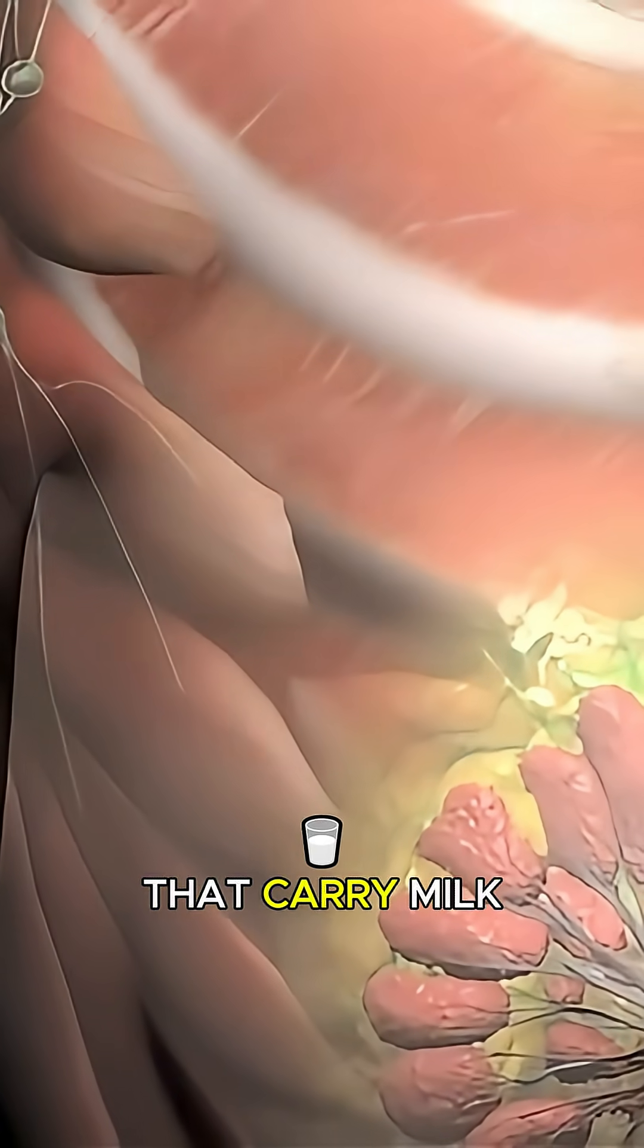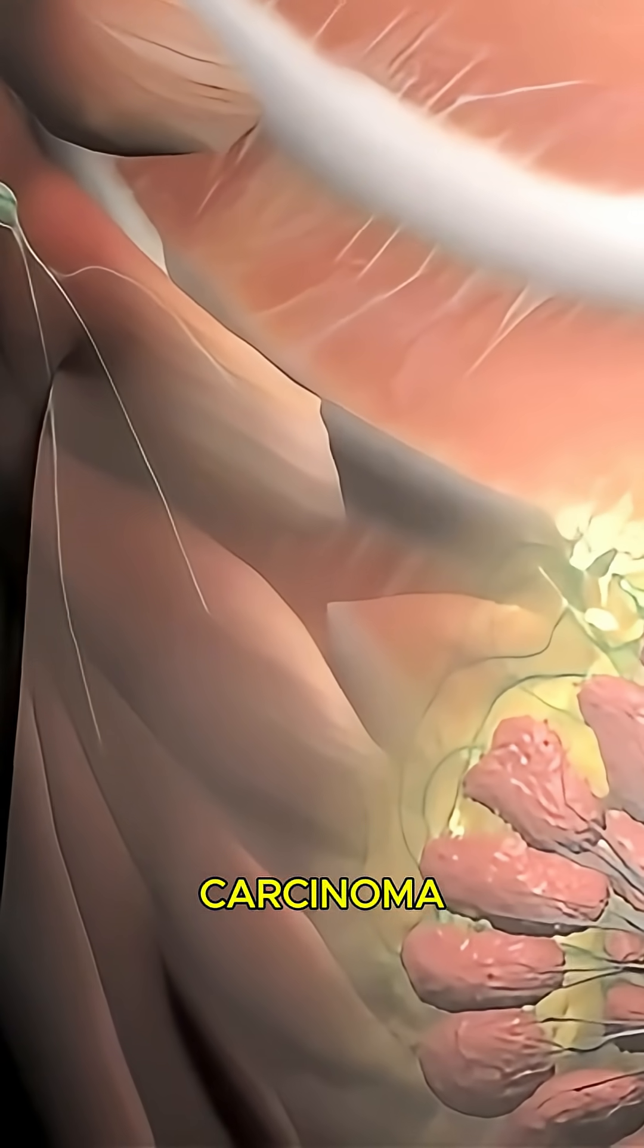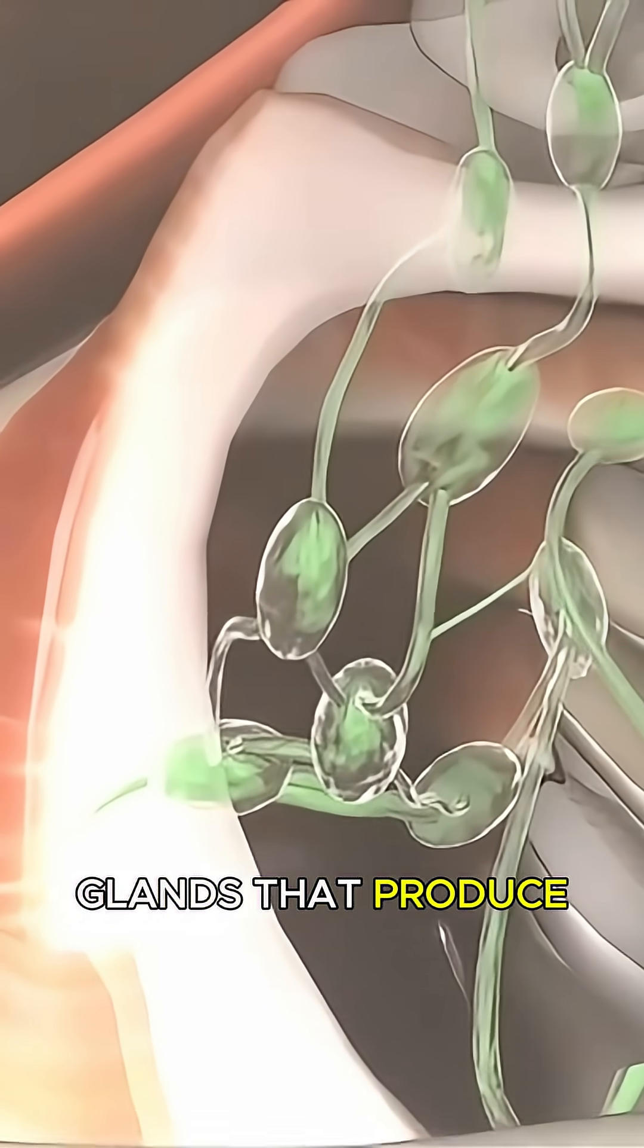Most breast cancers start in the ducts that carry milk to the nipple, known as ductal carcinoma, or in the lobules, which are the glands that produce milk.